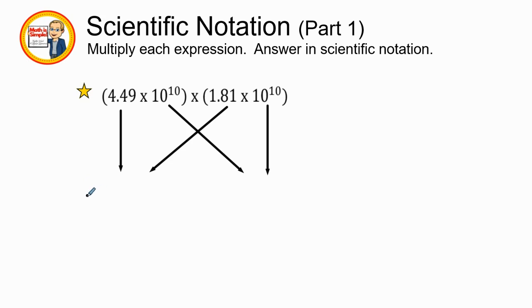We have 4.49 times 1.81, and this is going to be on our left side. So when we multiply 4.49 and 1.81, we get 8.1269.